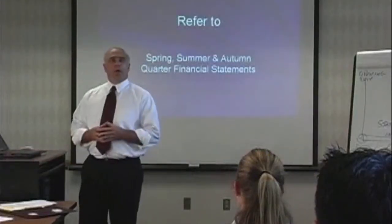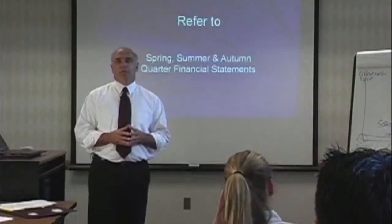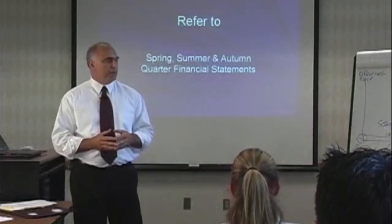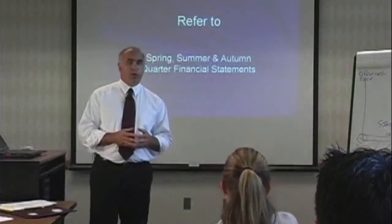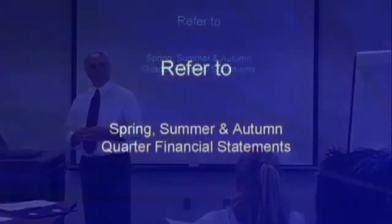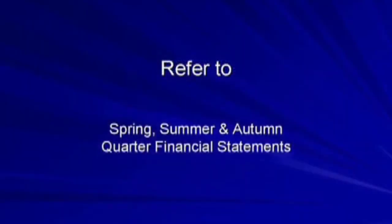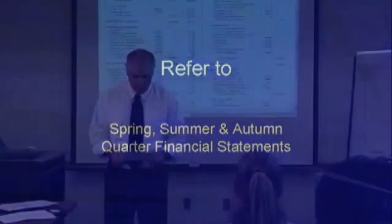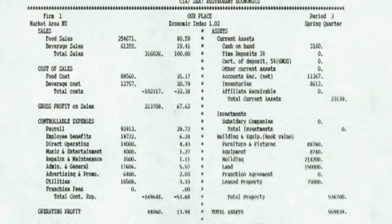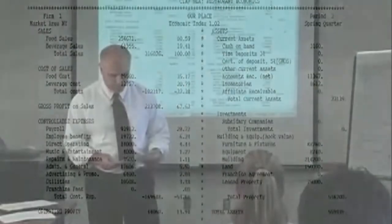To see how our place did in the subsequent quarters of the first year, we'd like to refer to the spring, summer, and autumn quarter financial statements. Looking at the spring quarter first, we note that sales have not changed markedly — still running at about $316,000 in sales.